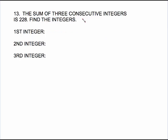So this says the sum of 3 consecutive integers is 228. Find the integers. We need to name the variables. Because it says 3 consecutive integers, I wrote down first integer, second integer, third integer. They are just consecutive integers.